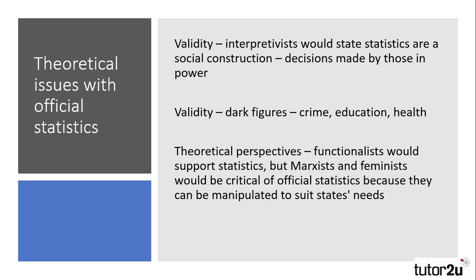There are lots of theoretical issues with official statistics. Firstly, validity. Interpretivists would suggest that statistics are a social construction, as it is up to those in power to decide what actions or behaviours fit definitions, and therefore behaviours of different social classes may be viewed more negatively than those of the elite. Secondly, there are issues relating to dark figures within official statistics — actions or behaviours that are not reported or recorded anywhere through official channels. Crime and domestic violence are two common dark figures, but also in education with the off-rolling of students not impacting on school's exam results, and health with undiagnosed or untested illnesses, meaning that the figures may be unrepresentative.